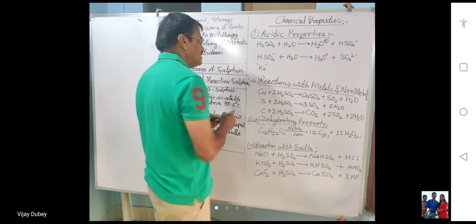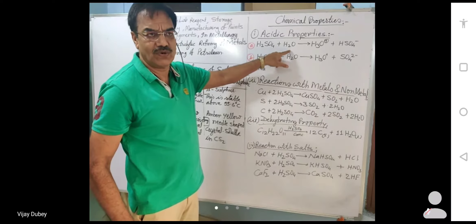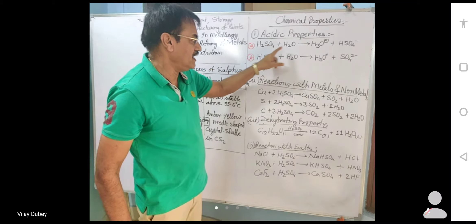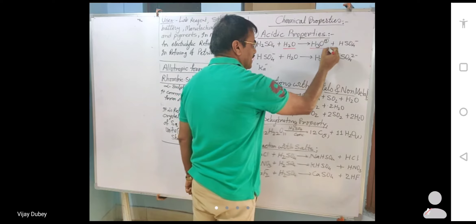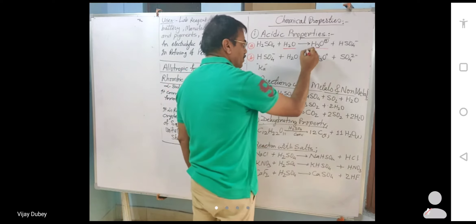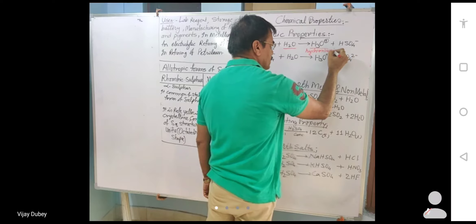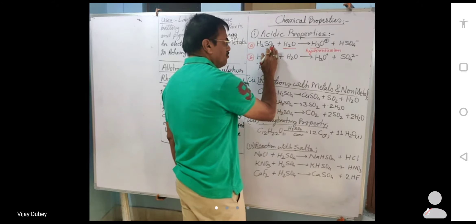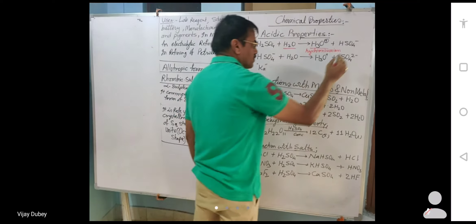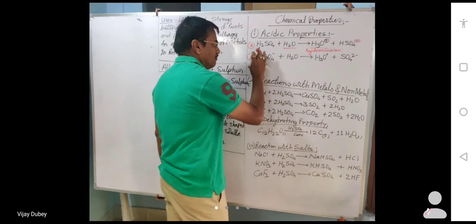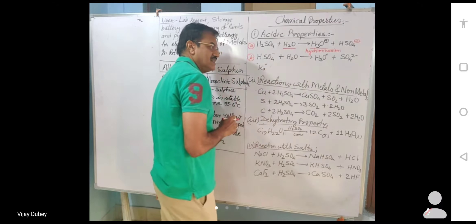In the first step of dissociation, sulfuric acid releases one proton, which is taken up by H2O to form hydronium ion H3O⁺. After losing one proton, H2SO4 gets converted to hydrogen sulfate HSO4⁻. In the second step, HSO4⁻ releases the second proton.